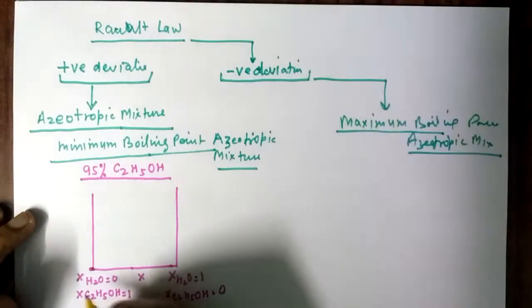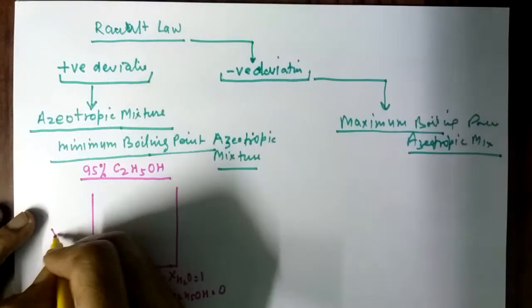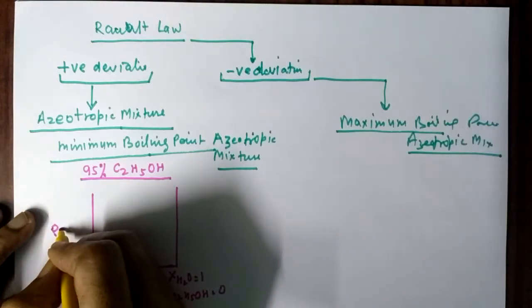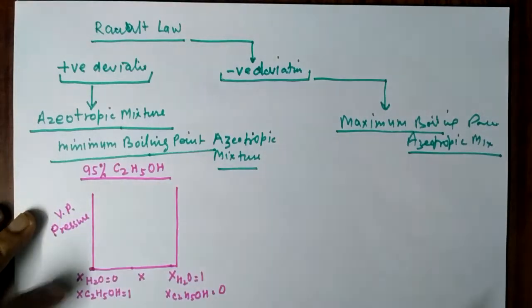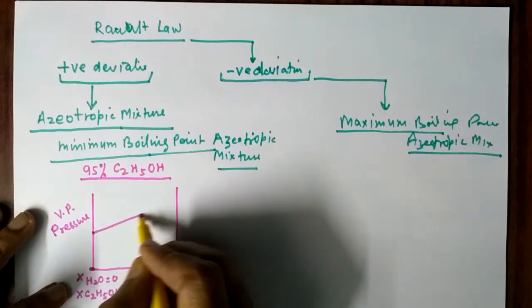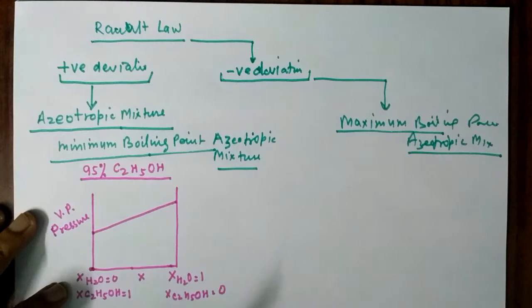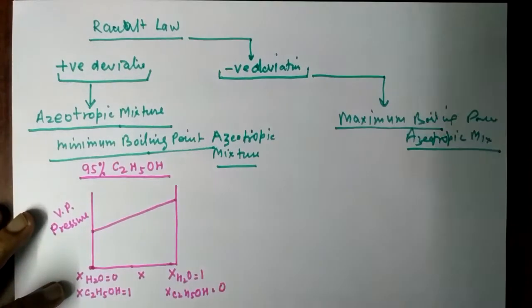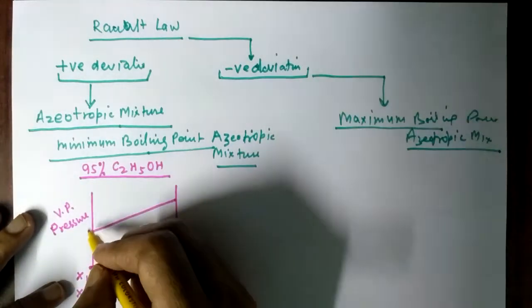The y-axis represents vapor pressure. The straight line shows the vapor pressure according to Raoult's law for an ideal solution, but this is not an ideal solution — it shows positive deviation. So the actual vapor pressure graph curves upward above the ideal line.